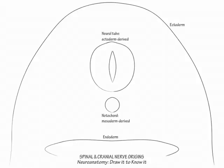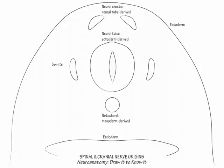Dorsolateral to the neural tube, draw the neural crests, which are neural tube derivatives that give rise to the peripheral nervous system. Next, draw somite tissue masses lateral to the notochord. Like the notochord, they are mesoderm-derived. The neural crest cells and somite tissue masses develop early in embryogenesis, and the somite masses derive sclerotomal, myotomal, and dermatomal cells. We will include the somites along with their derivatives, albeit in anachronism, for simplicity.